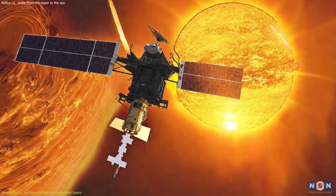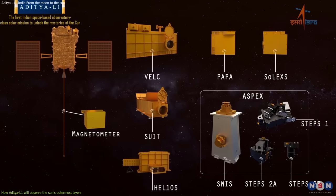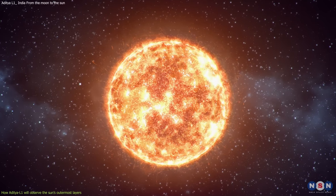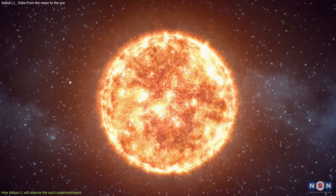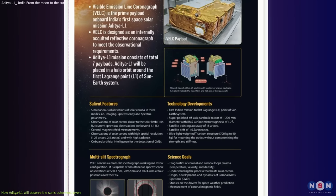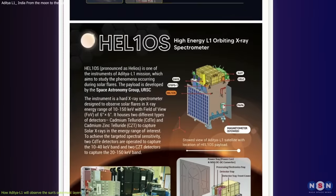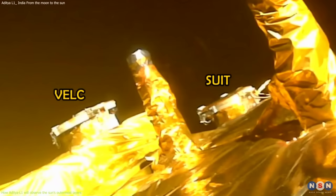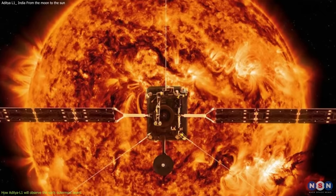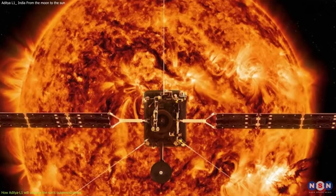This is where Aditya L1 comes in. Aditya is a spacecraft that carries seven scientific instruments that will measure different aspects of the Sun's activity in these outer layers. Some of these instruments are developed by India's space agency, while others are collaborations with other countries or institutions. By using these instruments, Aditya L1 will be able to observe the Sun's outermost layers with unprecedented detail and accuracy.